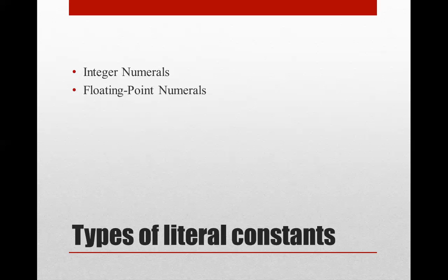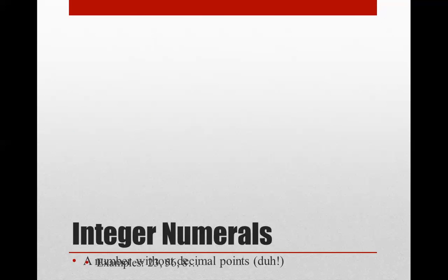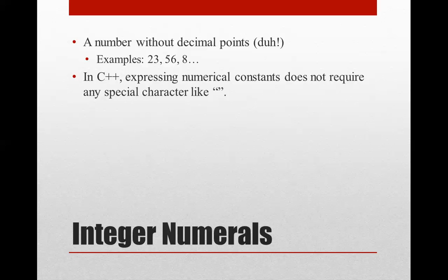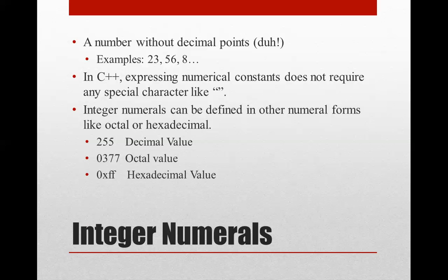The types of literal constants we have are: integer numerals, floating point numerals, boolean literals, character literals, and string literals. An integer numeral is a number without decimal points — for example, 23, 56, 8. Those are all integer numeral constants. In C++, to represent a number you don't have to put any special characters like double quotes or single quotes. If you write those, they don't become numbers — they become either strings or characters, as discussed earlier.